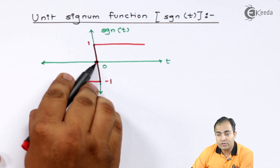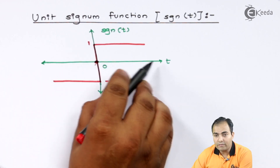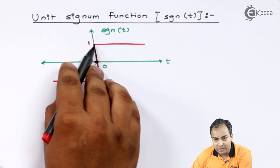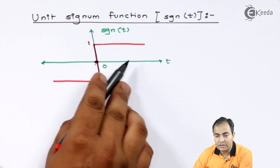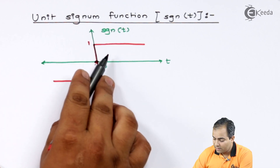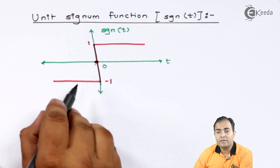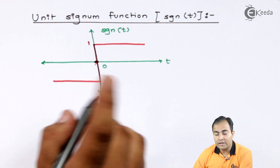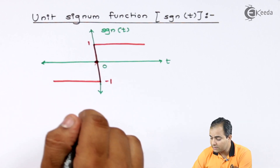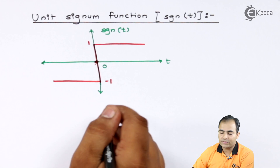At t equals to 0, amplitude is 0. And 0 onwards the amplitude is 1. On both the sides it is having amplitude 1 and minus 1. Now the important one is how to write the equations.